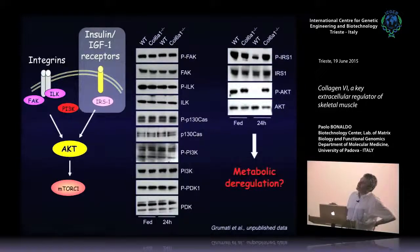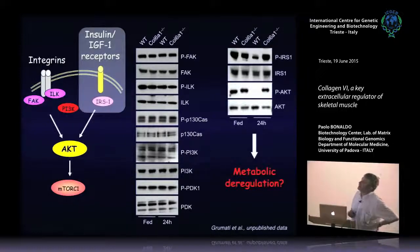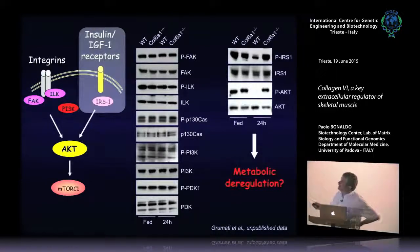What we found surprisingly is that the alteration is in a completely different kind of receptor — completely unexpected to have a link with collagen 6 — the insulin/IGF-1 receptor. We checked this pathway and found that IRS-1, a downstream signal of this receptor acting on Akt, is very altered in knockout mice. The phosphorylated form of IRS-1 is much higher than in wild-type. It looks like there is a metabolic deregulation, and we are now checking more carefully what is going on here.